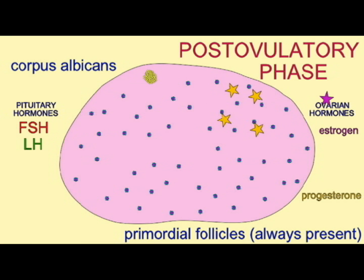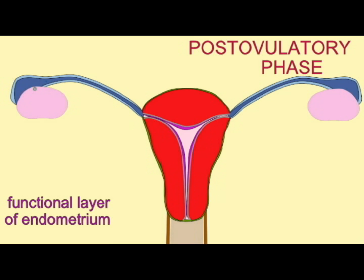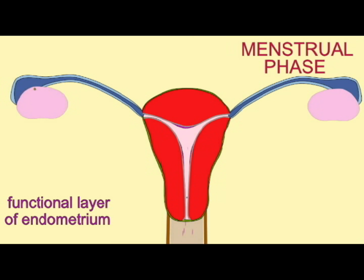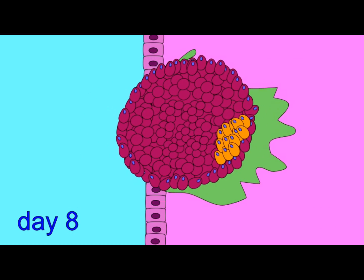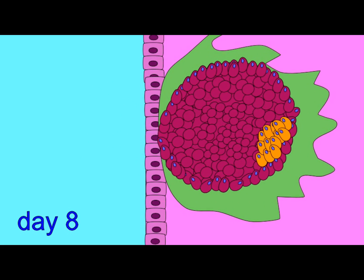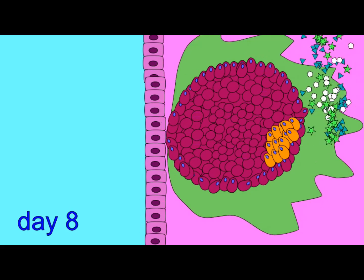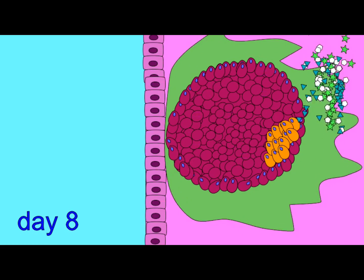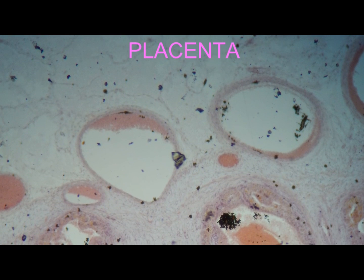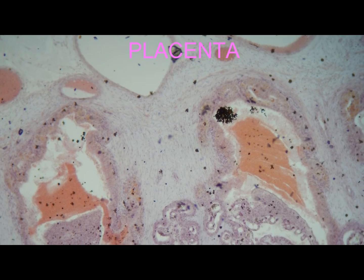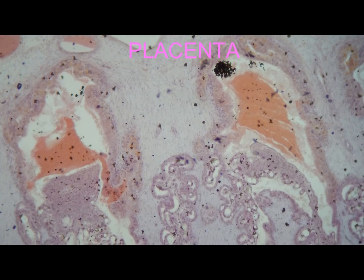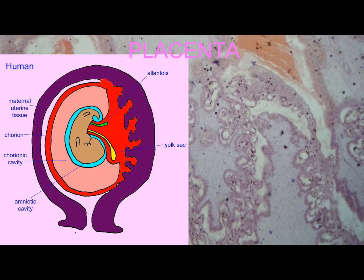The corpus luteum will be maintained for about 7 to 14 days after ovulation, unless the signal from a developing embryo — human chorionic gonadotropin — is released, in which case the corpus luteum will be maintained for another 3 months, secreting the progesterone which maintains the uterine lining that the embryo has attached to, at which point the placenta, 3 months later, is making sufficient hormones to maintain itself.